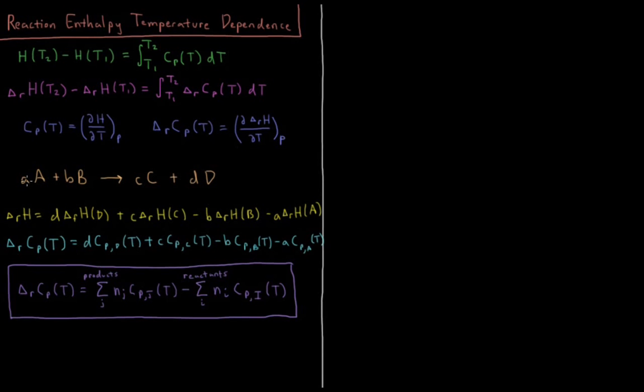Let's say we have this reaction here: A A plus B B goes to C C plus D D. So the enthalpy of the reaction there is just the stoichiometric coefficients of the products times the enthalpy of formation for all the products minus the same coefficients times the